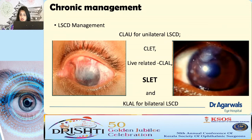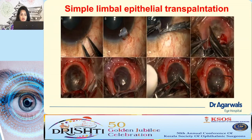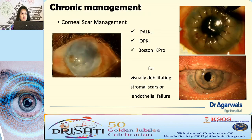For limbal stem cell deficiency, options include conjunctival limbal autograft, living related autograft, and the preferred current approach is the Simple Limbal Epithelial Transplant (SLET), which has high success rates, better surgical outcomes, and requires less laboratory processing. For corneal scarring, DALK can be performed for superficial damage, optical keratoplasty for deeper involvement, and if keratoplasty repeatedly fails due to limbal stem cell deficiency, a Boston Keratoprosthesis may be necessary.